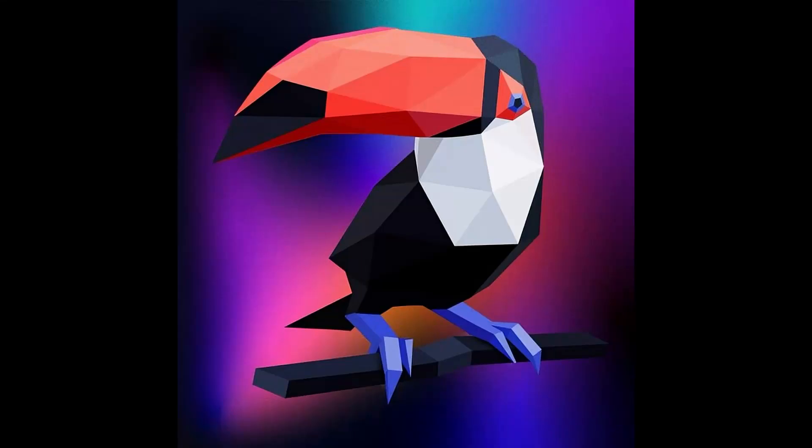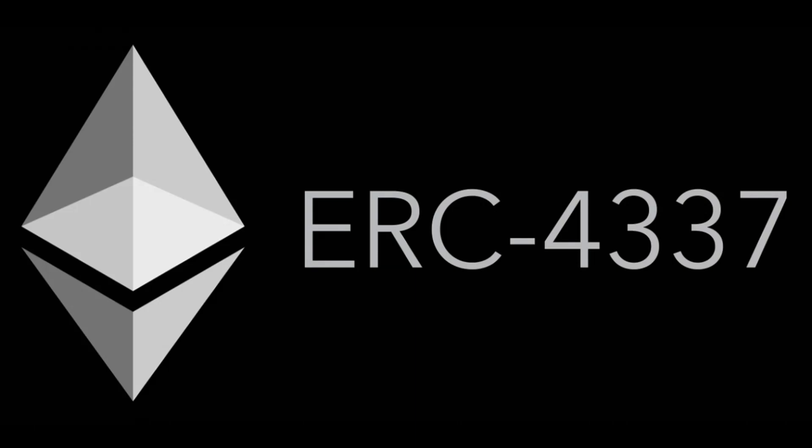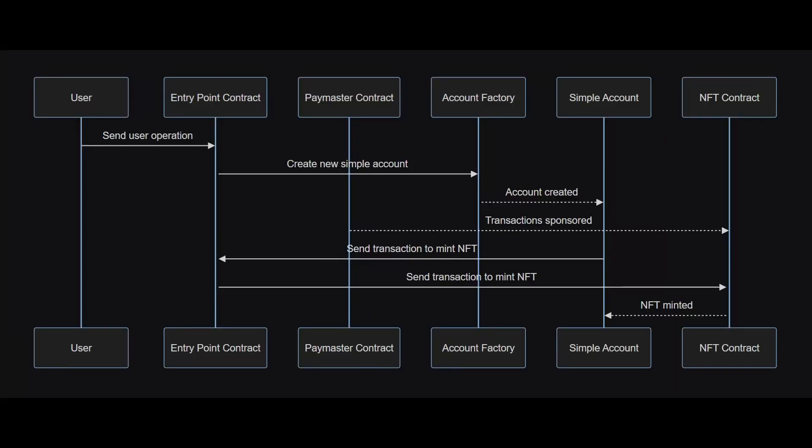Hello everybody, here Matan from Tukon.io and today we're going to learn how to implement the ERC-4337 standard. We will send a user operation to the entry point contract to create a new simple account using Account Factory. We will also create a Paymaster contract to sponsor the transactions of the simple account. And finally, we will send the transaction with the simple account to mint an NFT token. All of this we will execute on the mobile testnet.